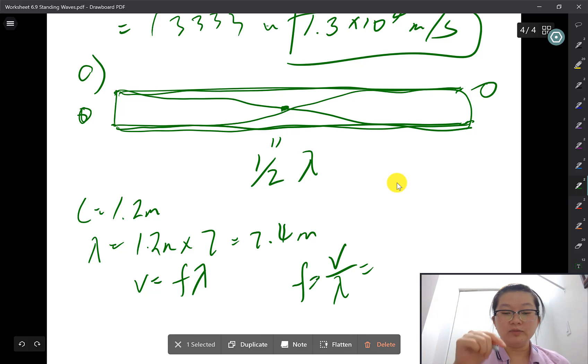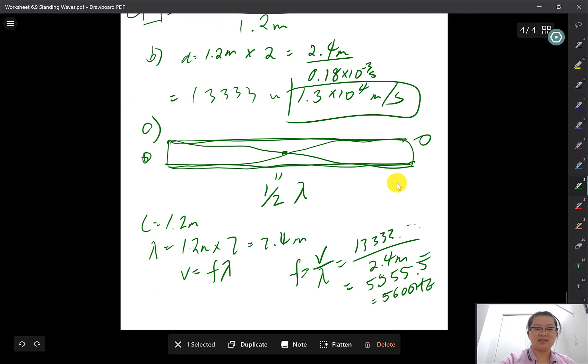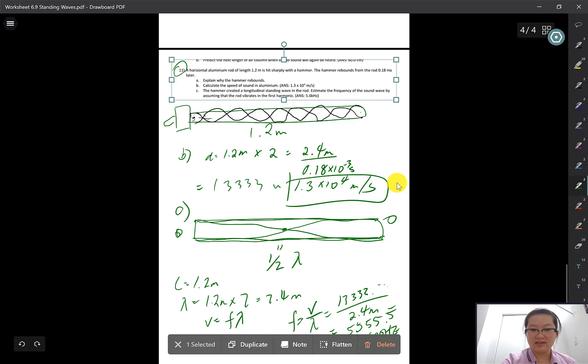The speed of sound in aluminum is what we found before: 13,333 meters per second. Divided by our lambda of 2.4 meters, that gives us 5,555.5 repeating hertz, which we can round to 5,600 hertz or 5.6 kilohertz.